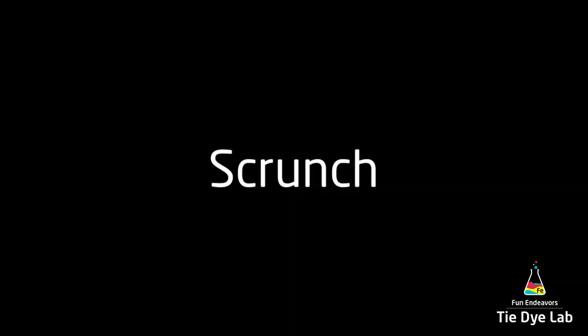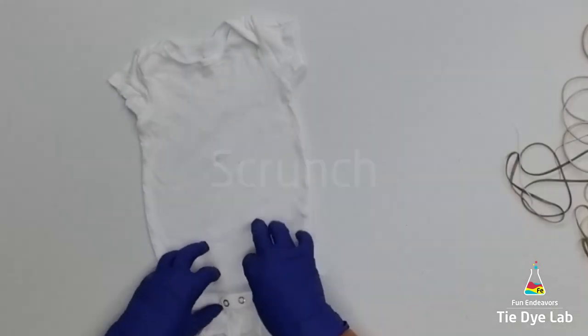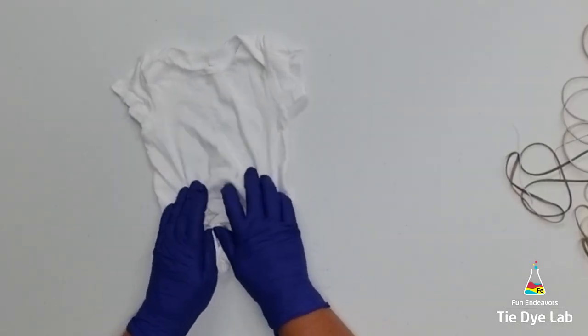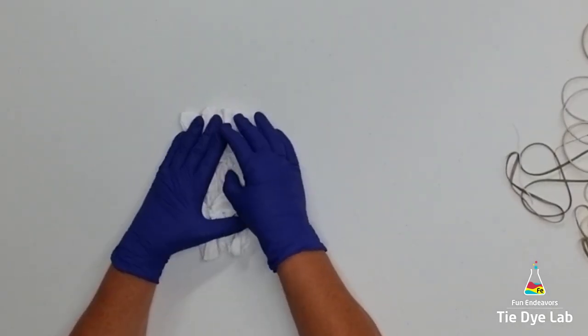The third one I'm doing is a scrunch. I'm just going to take and scrunch up my onesie and hold it in place with some rubber bands.